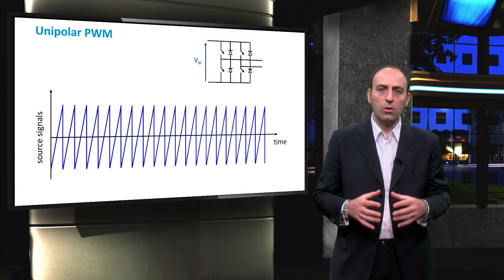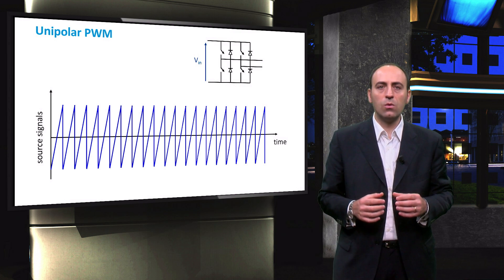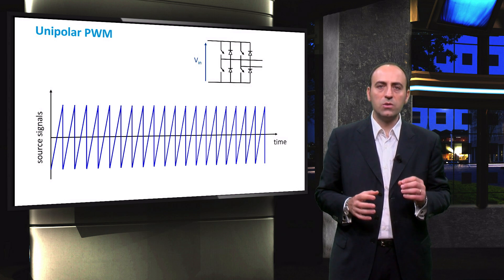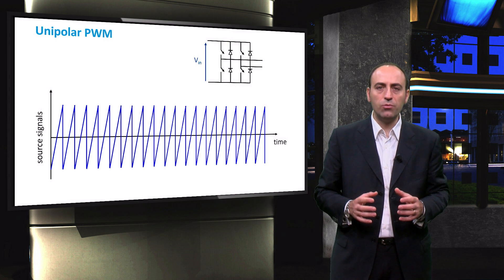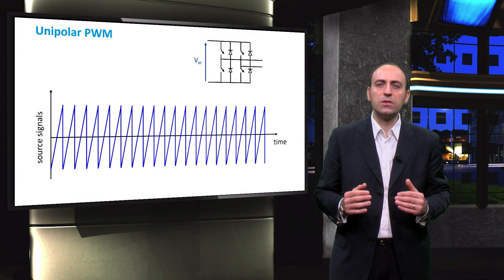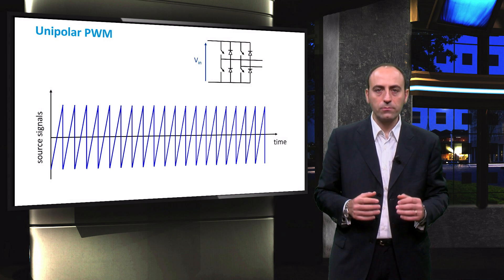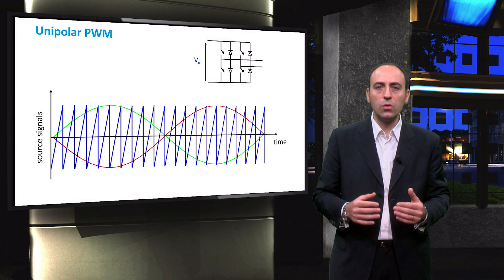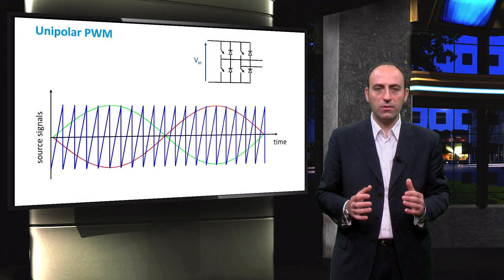Another possible pulse width modulation scheme is called unipolar voltage switching. In this case, the switches in the two legs of the H-bridge inverter are not switched simultaneously, as it was in the bipolar scheme. In this case, two signals are then needed to control separately the two legs of the inverter.